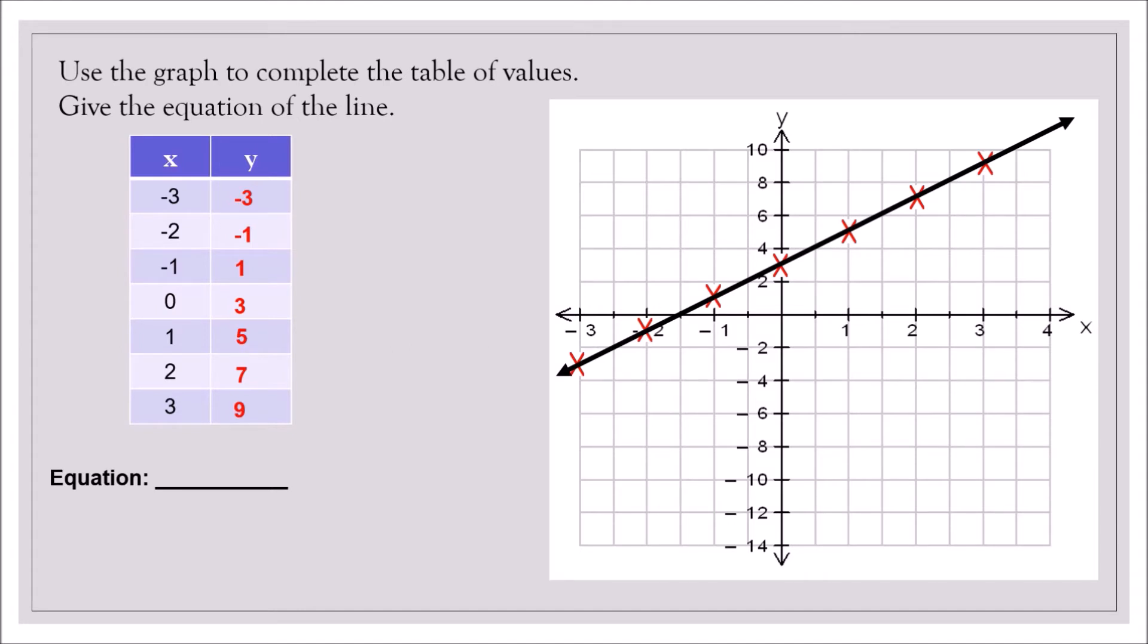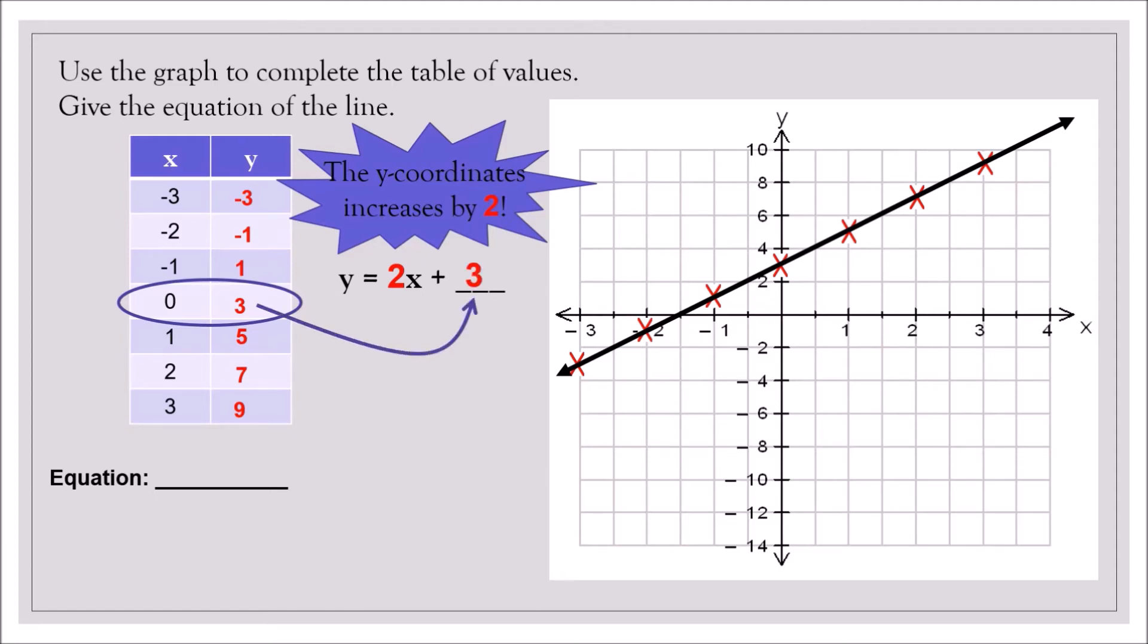Do you see a pattern of the y coordinates? Think about the pattern. You will see how is it increasing. Yes, the y coordinates are increasing by 2. So that means on our equation, we have the term 2x. Now, we will add a number here. But what number should we add? So let's look at the value of y when x is 0. So when x is 0, y is 3. So that means we add here a 3. So that means the equation of this line is y equals 2x plus 3.